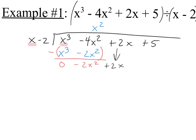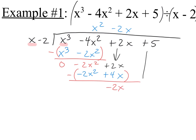The process starts over. What times x equals negative 2x²? That's negative 2x. Negative 2x times x is negative 2x², and negative 2x times negative 2 is positive 4x. I subtract again: the first terms cancel, and 2x minus 4x is negative 2x. Then I bring down the 5, giving me negative 2x plus 5.